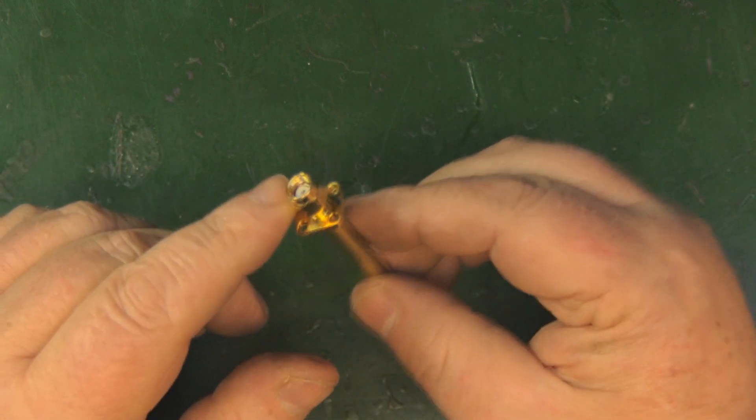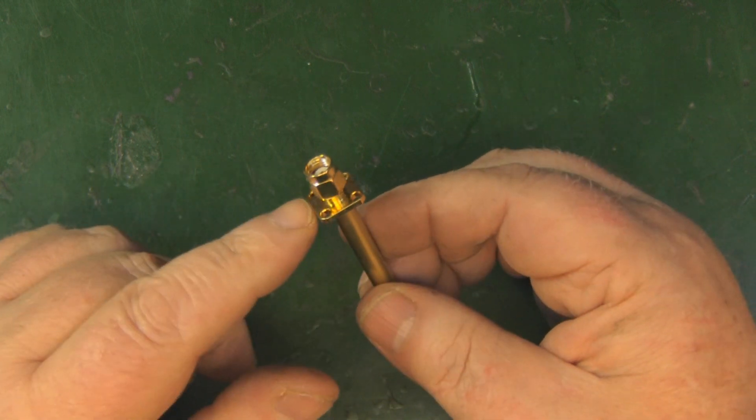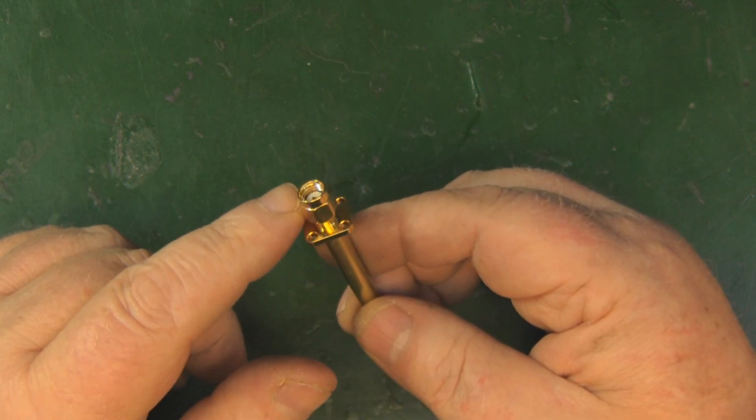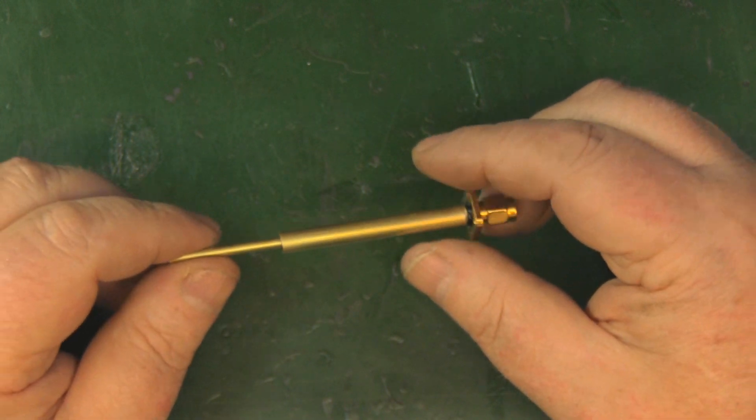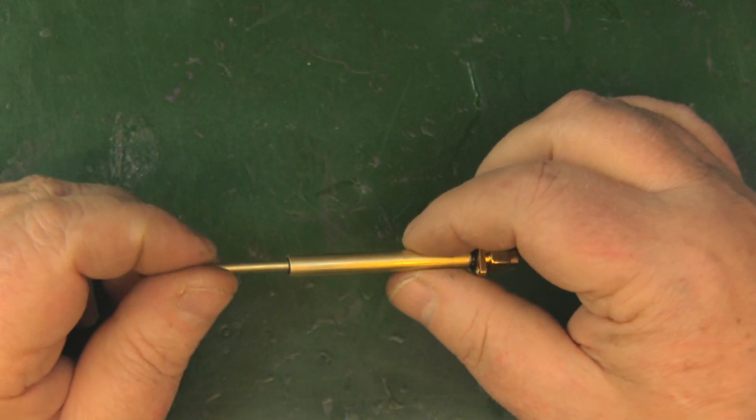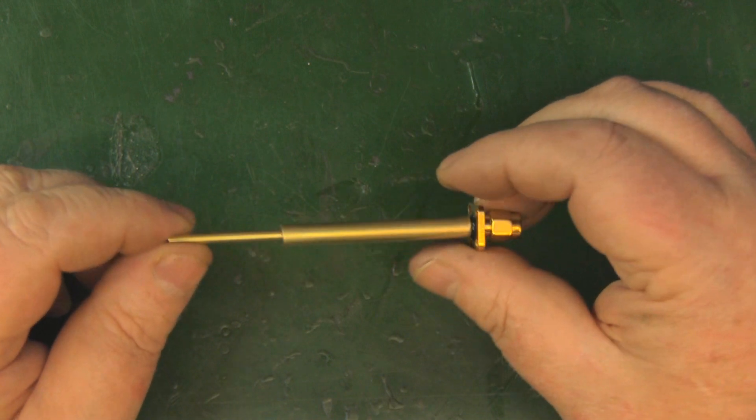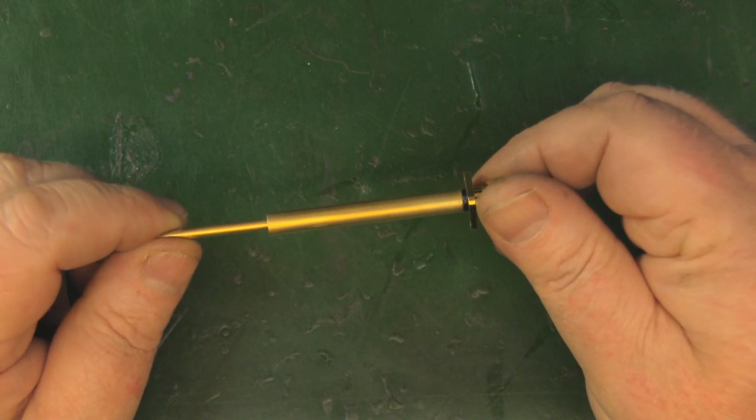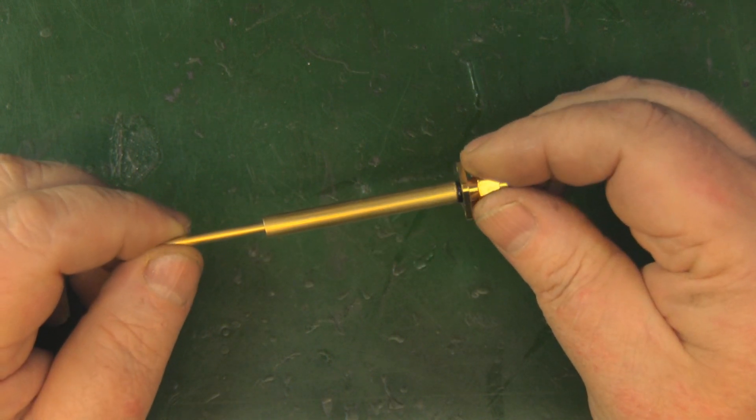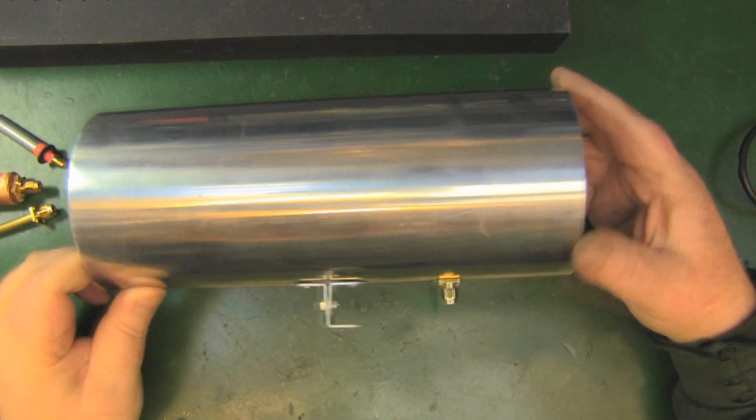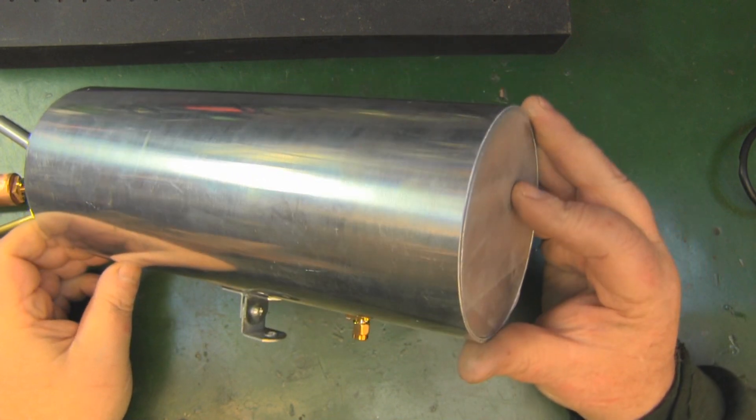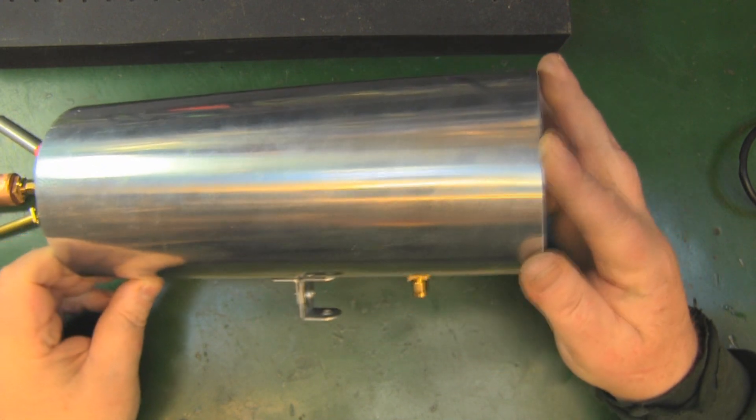We have a four hole panel mount SMA, the kind I use on my cantennas. Let's take a look at the cantenna we're going to use, just changing the driven elements and testing with a test signal I've set up to see if we get an increase in gain.